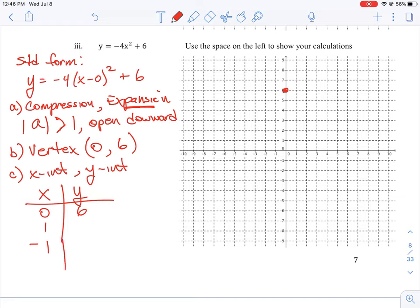So one squared is one, times negative four is negative four, plus six is going to be two. Negative one squared is one, times four is negative four, so this is going to be two. So let's just put those three points down.